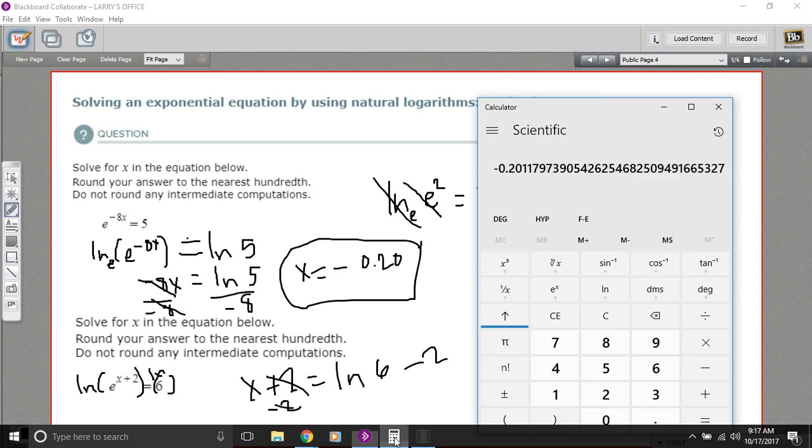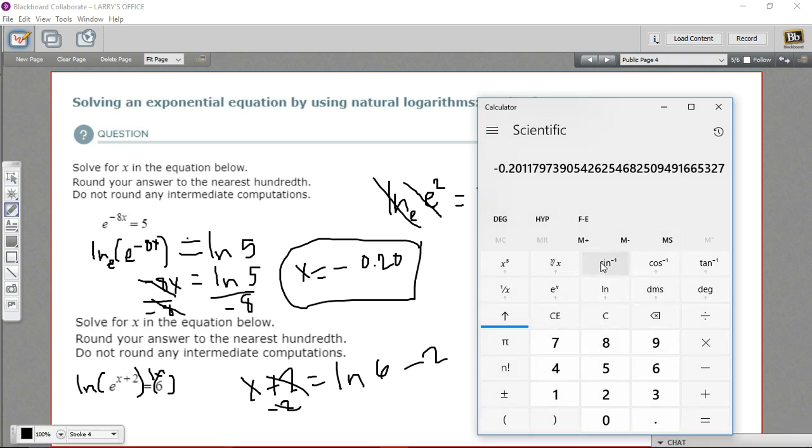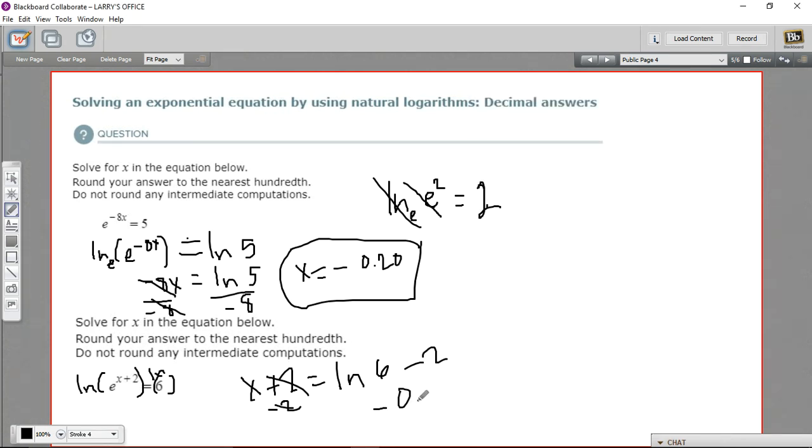So let's bring up our calculator again. So we're going to punch in 6, take the natural log, and then subtract 2. And we get a negative 0.21. So negative 0.21 for x.